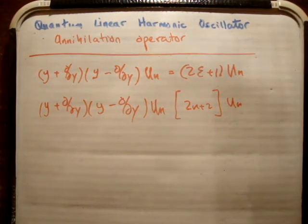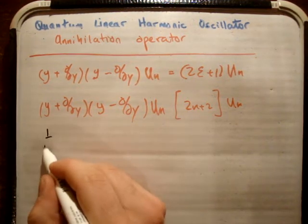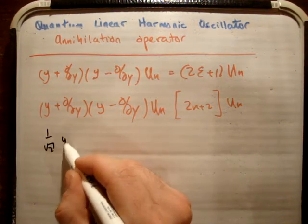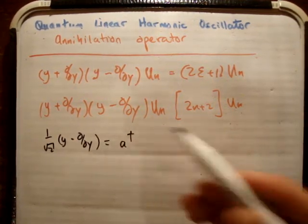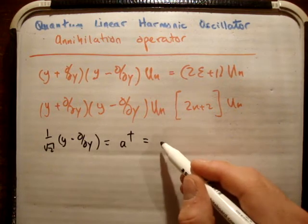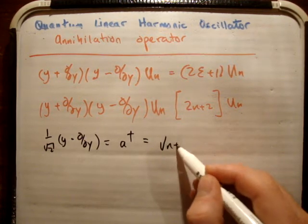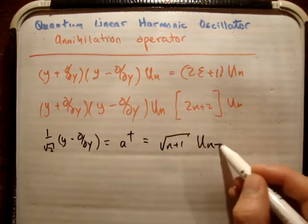But in a previous video, in my video for the creation operator, I showed you that 1 over root 2 times y minus d/dy is equal to a-plus or a-dagger, depending on what you want to call it. And that's going to equal root n plus 1 times UN plus 1.